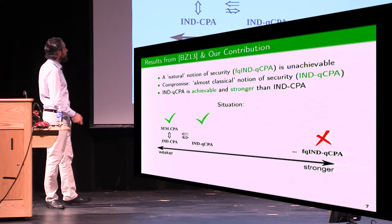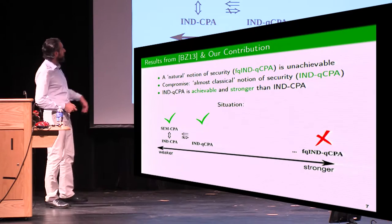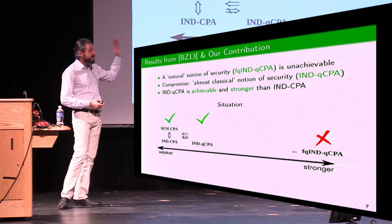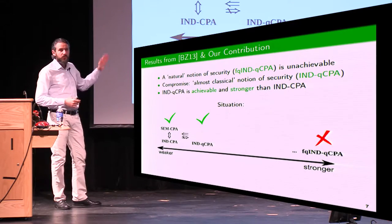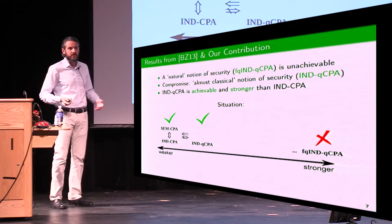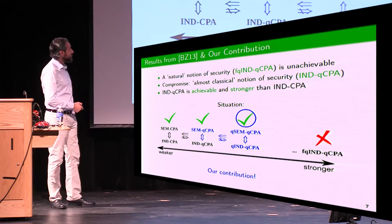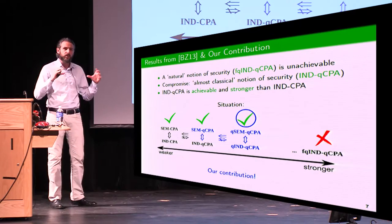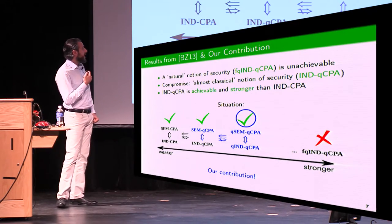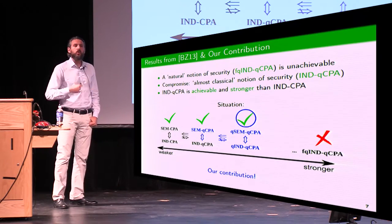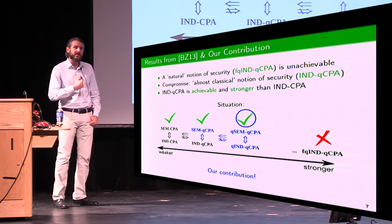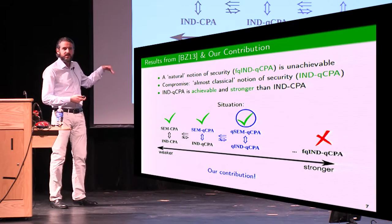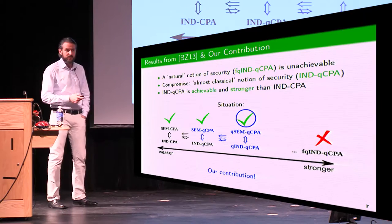On one hand, you have equivalent notions of indistinguishability and semantic security for the classical world. On the quantum side, you have a very strong notion that you cannot achieve. And in between, you have this almost classical indistinguishability notion. What we do is extend and complete this framework for analyzing the security of encryption schemes by defining a new security notion: quantum indistinguishability. We show it's strictly stronger than previous notions, that it's achievable, and we show equivalent notions of semantic security.